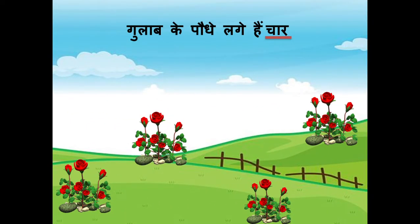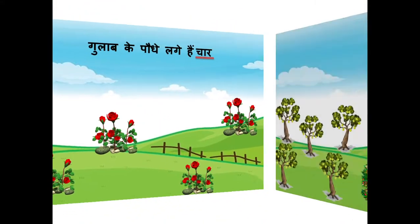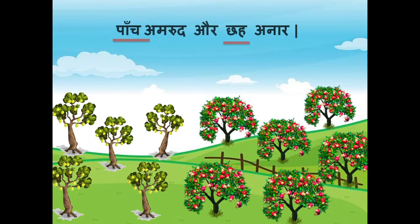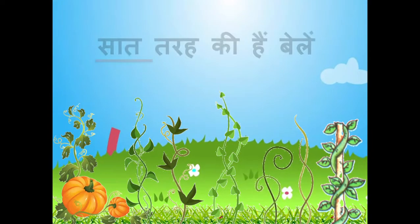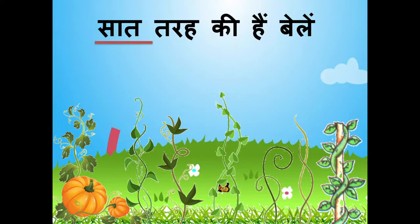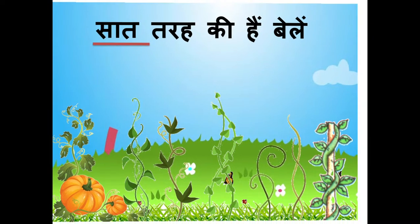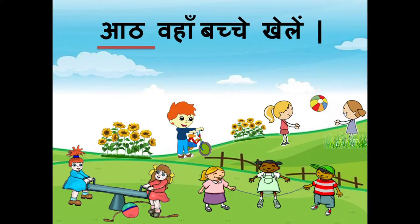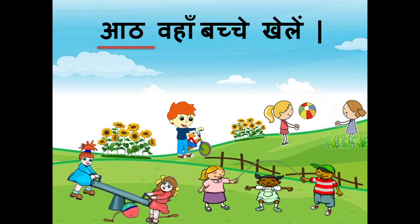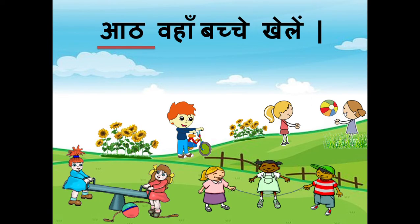Gulab ke paudhe lage hain 4, 5 amrood aur 6 anaar, 7 tarah ki hain bele, 8 wahan bachche khelein. (4 rose plants are there, 5 guava and 6 pomegranate, 7 kinds of jasmine creepers, 8 children play there.)